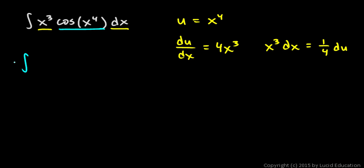So I can rewrite the integral as this cosine of u times 1 fourth du. And then the 1 fourth will come out front. So this is 1 fourth times the integral of cosine u du.